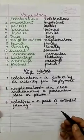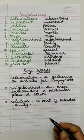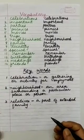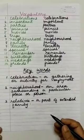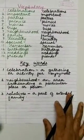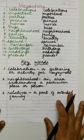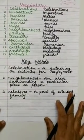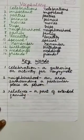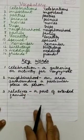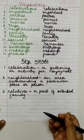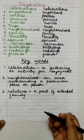Remember: R-E-M-E-M-B-E-R. Birthdays: B-I-R-T-H-D-A-Y-S. Weddings: W-E-D-D-I-N-G-S. Friends: F-R-I-E-N-D-S. In this way, even big words we are able to learn without mugging up spellings. Now we will do the keywords. Celebration means a gathering or activity for enjoyment.